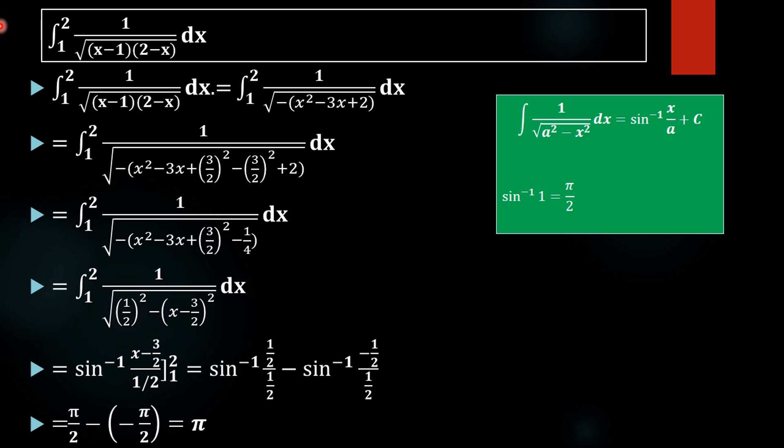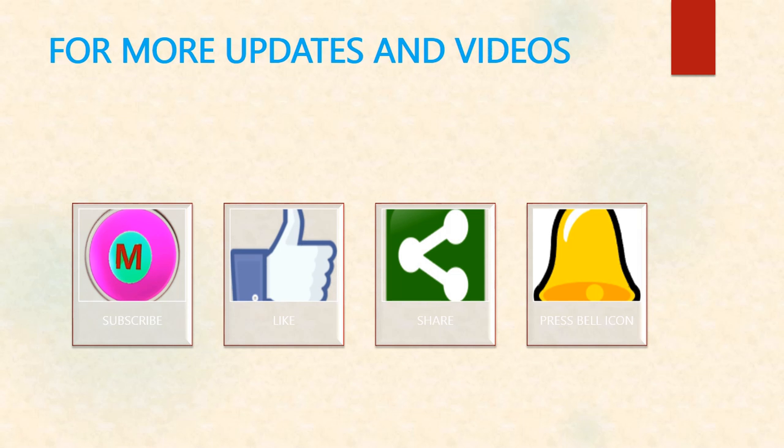So this is how we apply the completing square method to find the value of this integral. The answer is pi. Thank you.